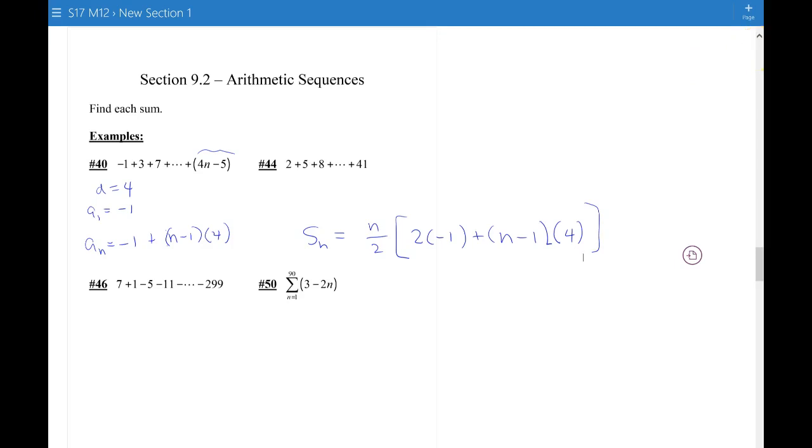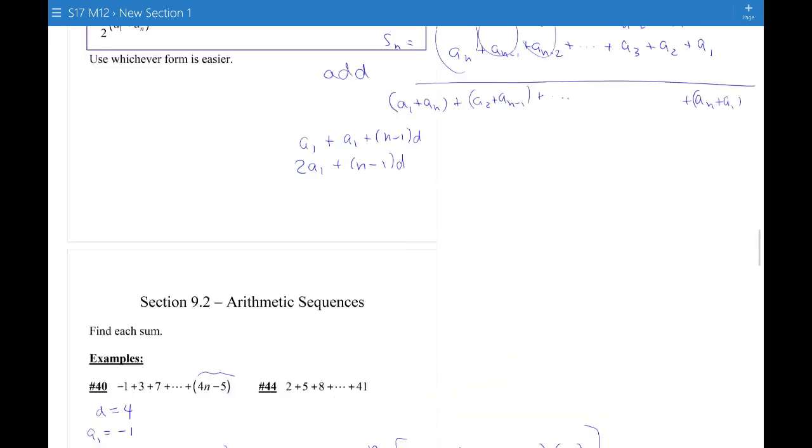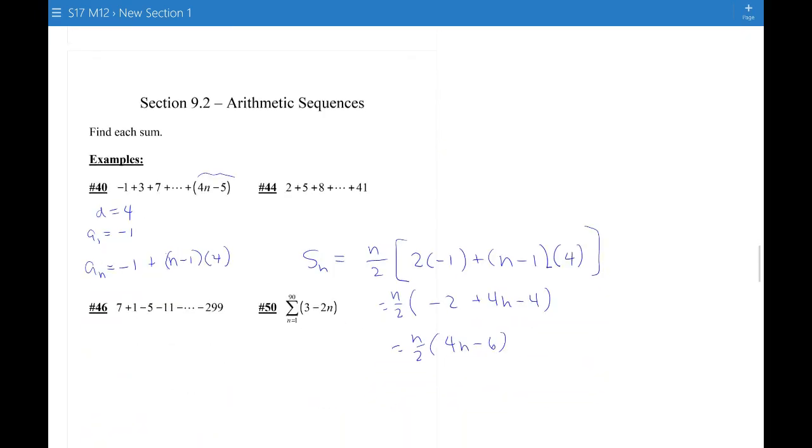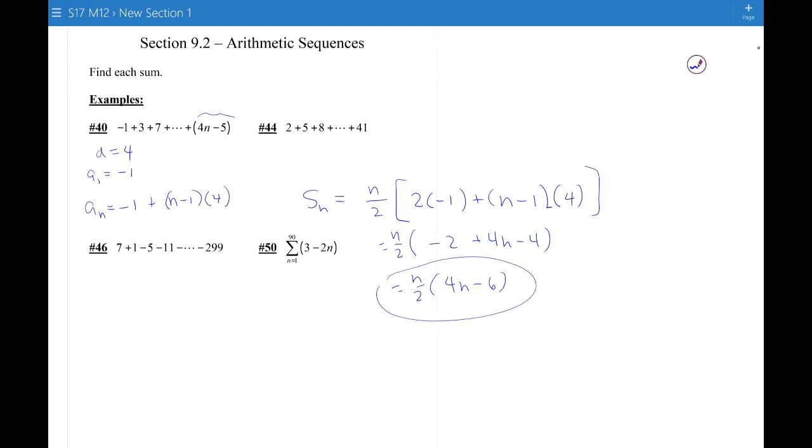So this is the formula. We can simplify it. We have negative 2 plus 4n minus 4 in our parentheses times n over 2. So I have 4n minus 6 times n over 2. Make sure I got the formula right. So this is our formula for the first n terms of this sum.